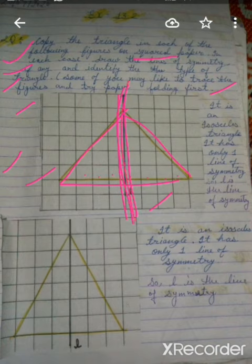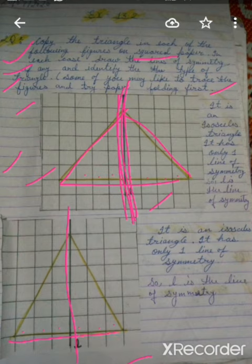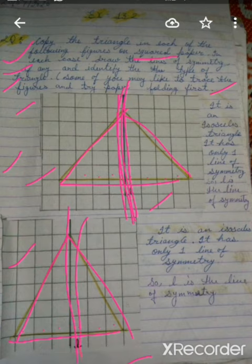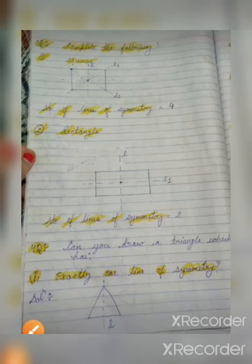Now the next question. In this figure, we will draw a line of symmetry, then count the boxes: one, two, three on one side and one, two, three on the other side of the line of symmetry. Draw the baseline and make the triangle. This is also an isosceles triangle with only one line of symmetry. L is the line of symmetry.